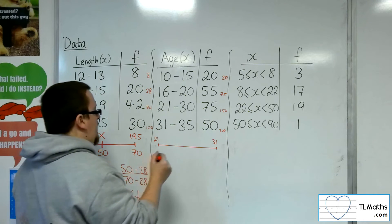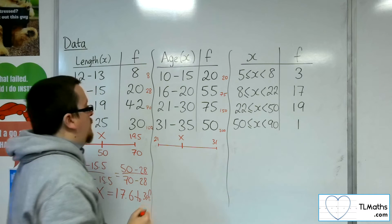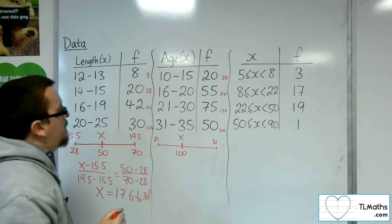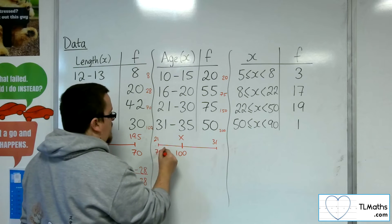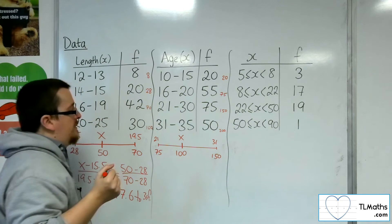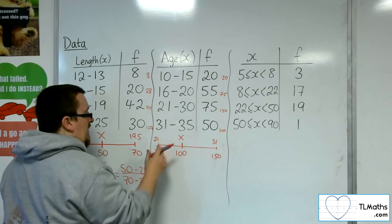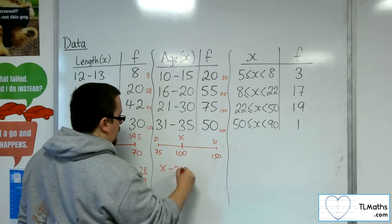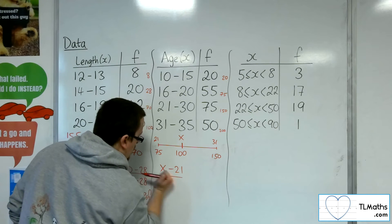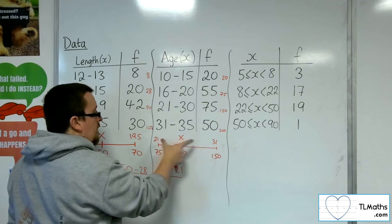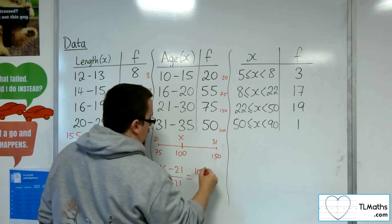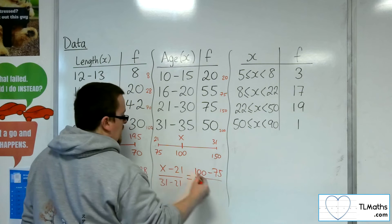And the median value is going to be somewhere between the two, at the 50th, sorry, the 100th position. So I've gone through 75 bits of data by the time I come into the group, and I'm going to leave having gone through 150 bits of data. So, in the same way as before, the ratio of x to 21 over 31 to 21 is the same as 100 to 75 over 150 to 75.